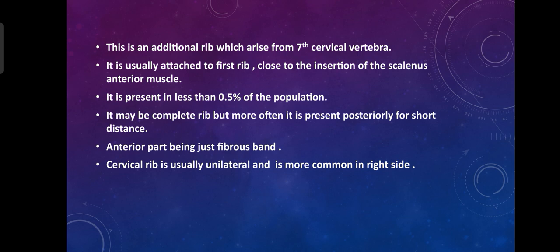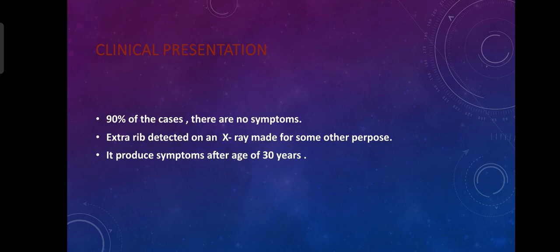The cervical rib is present in less than 0.5 percent of the population. It may be a complete rib, but more often it is present posteriorly for a short distance, with the anterior part being just fibrous band.